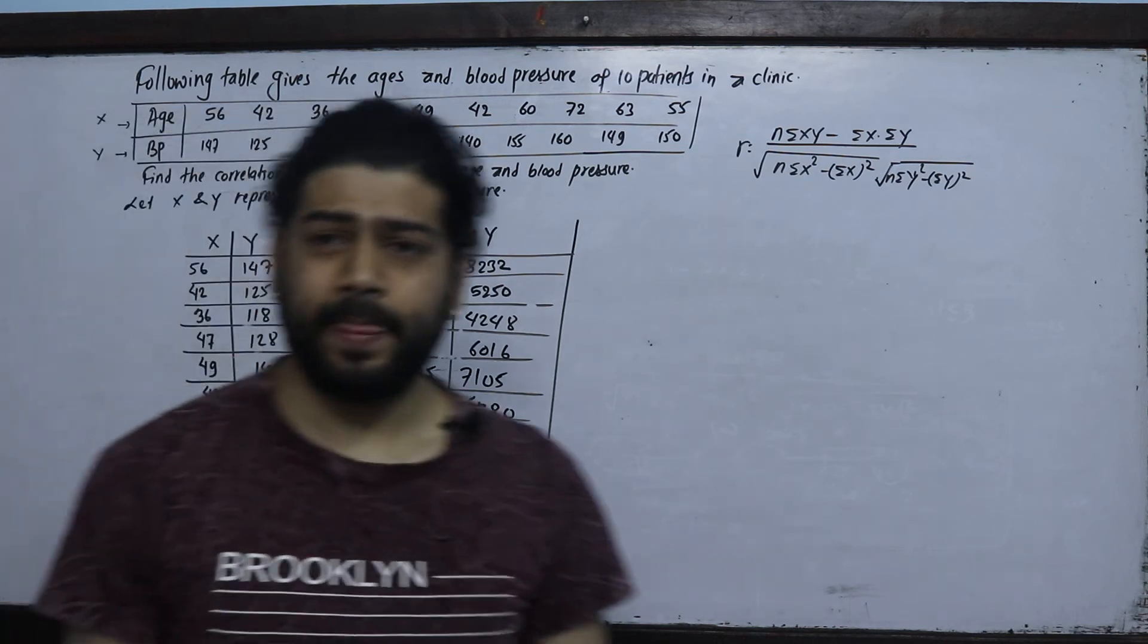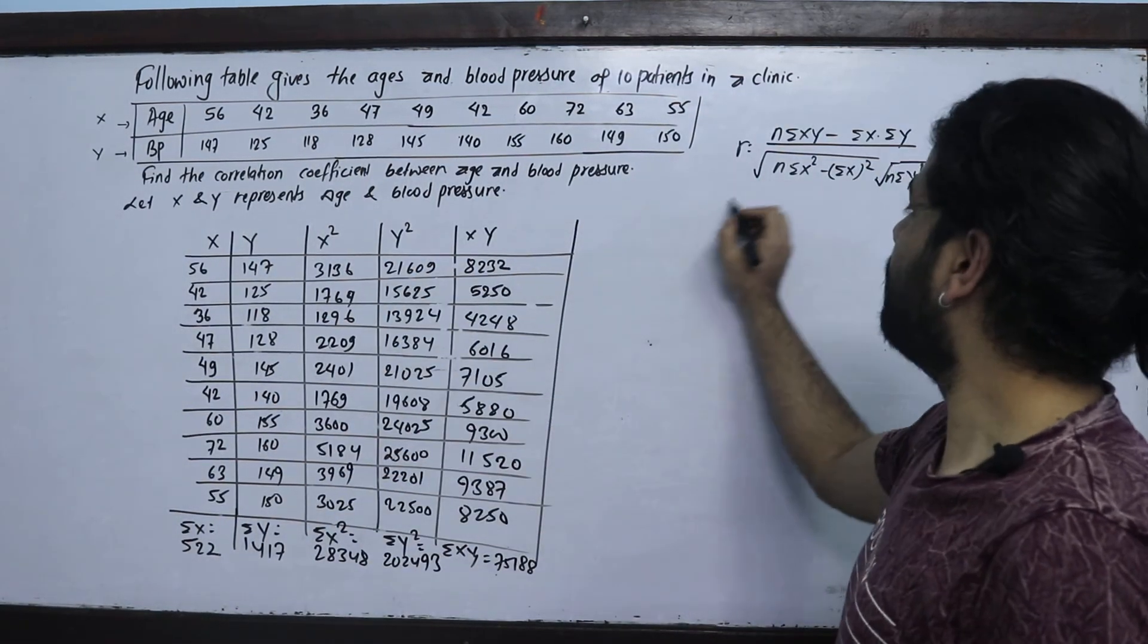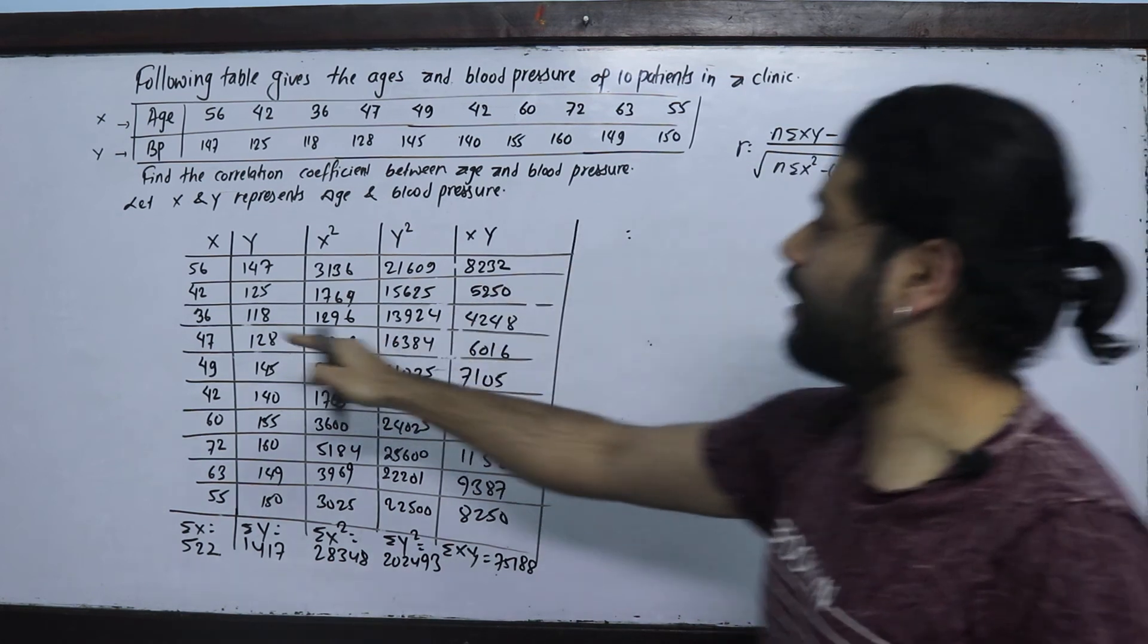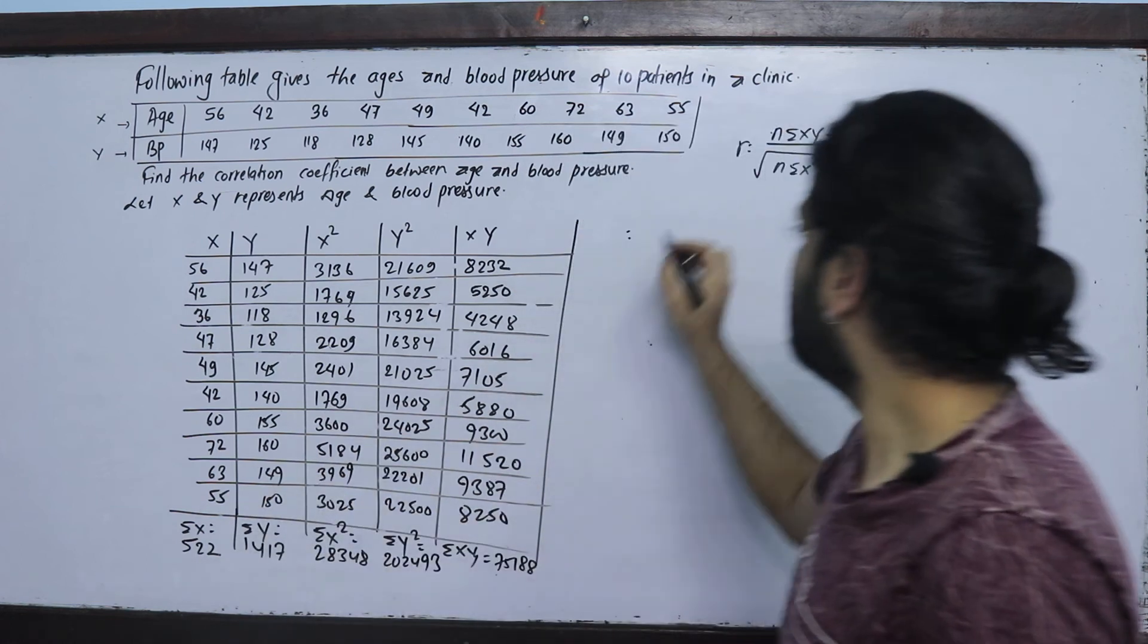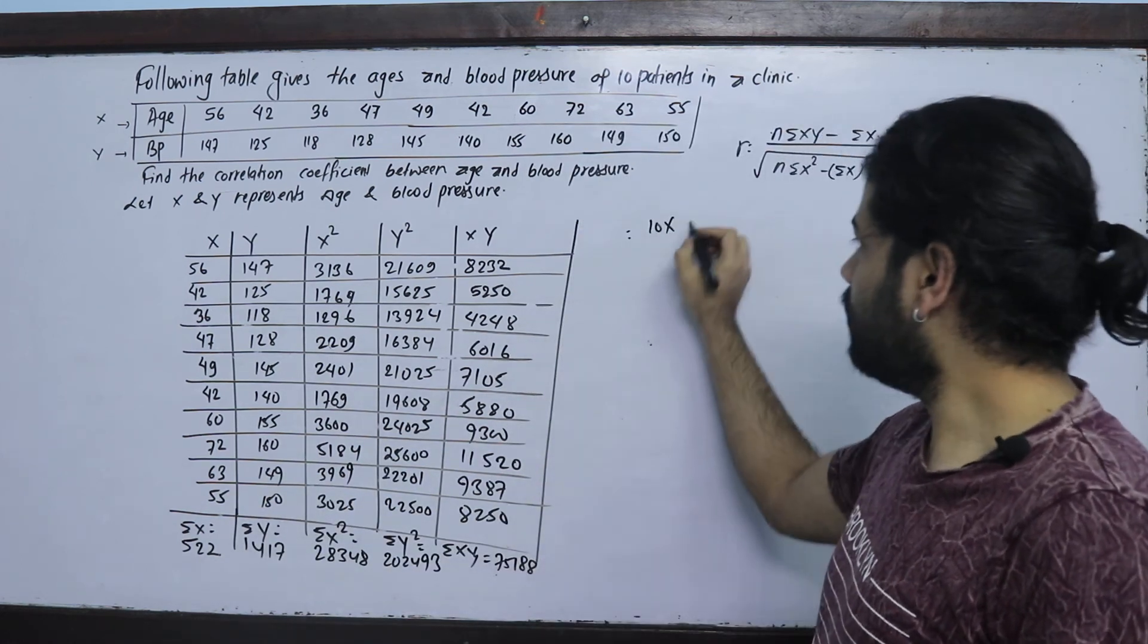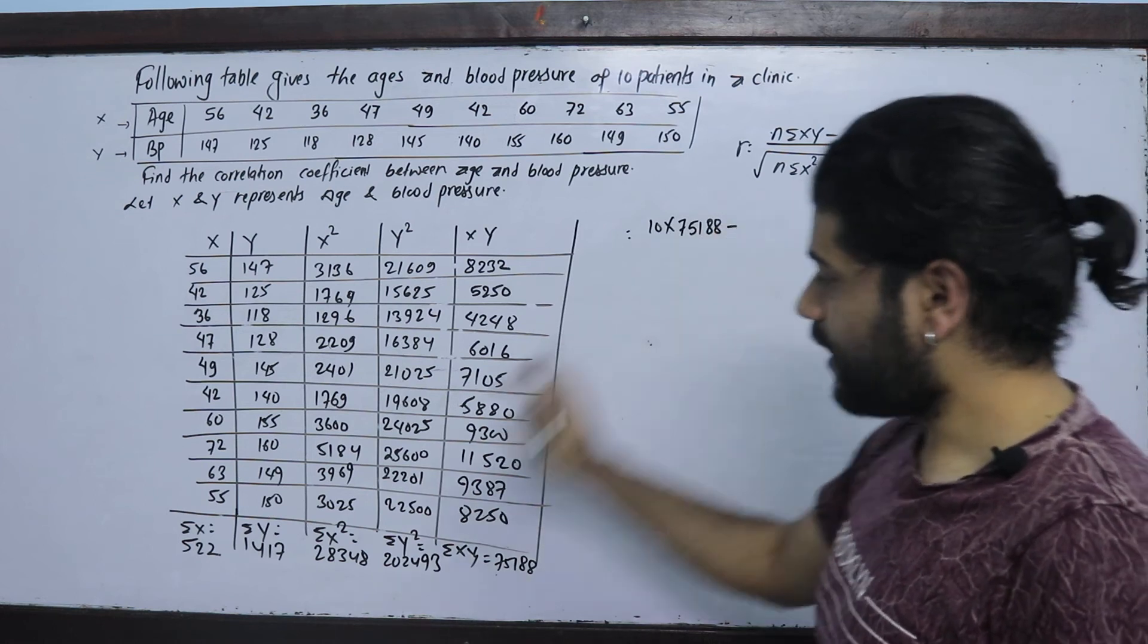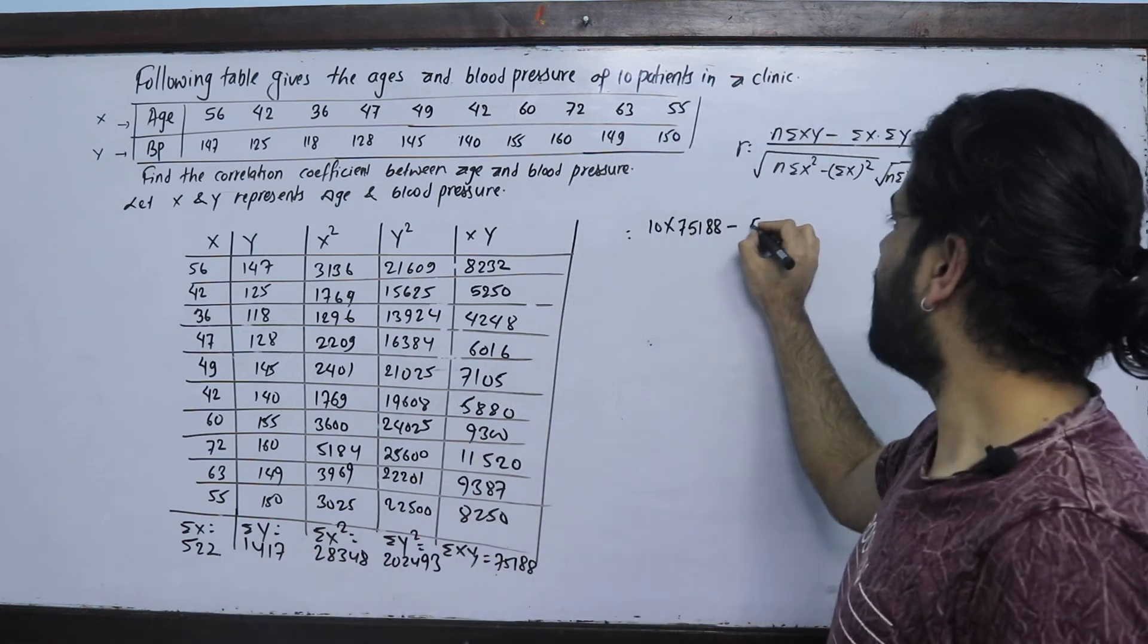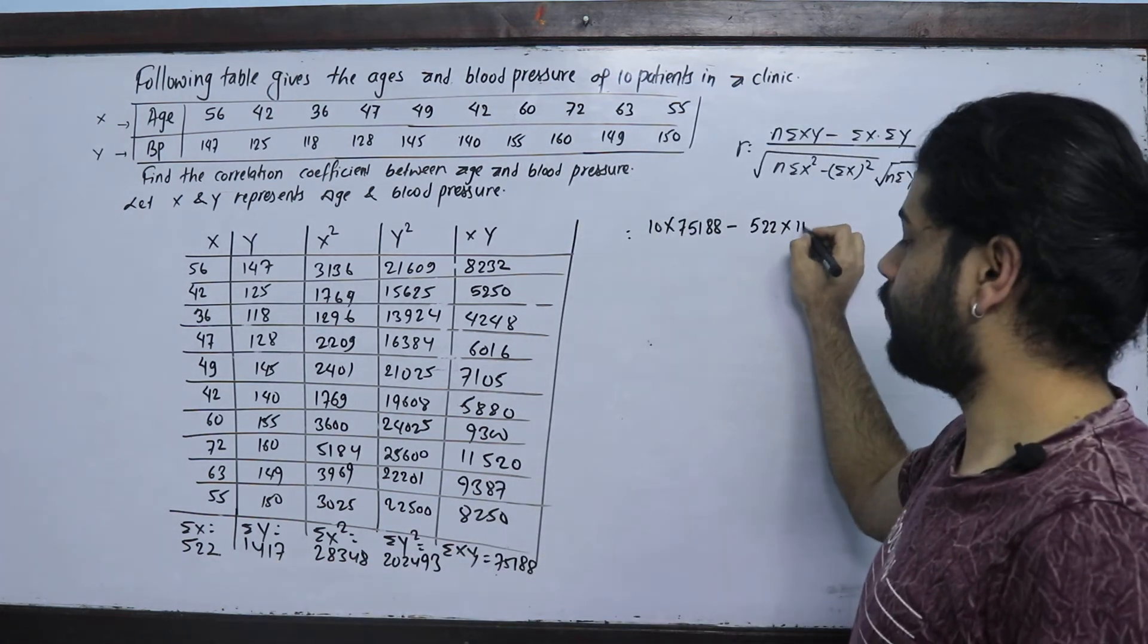The summations are: summation x equals 522, summation y equals 1417, summation x square equals 28348, summation y square equals 202493, summation xy equals 75188.